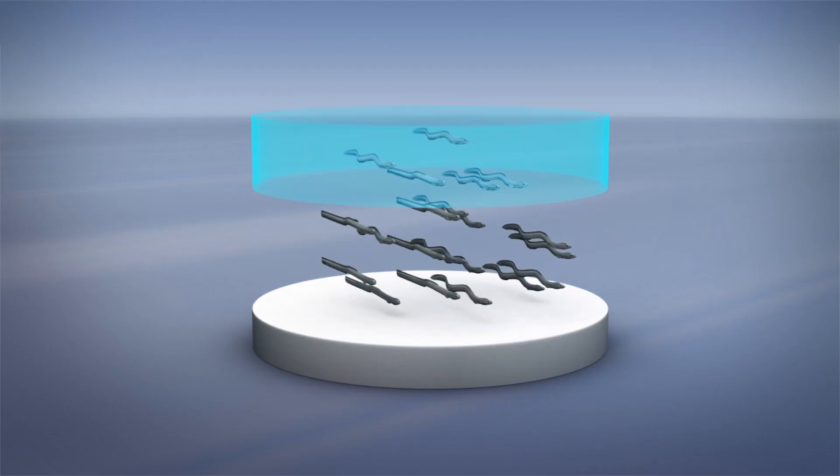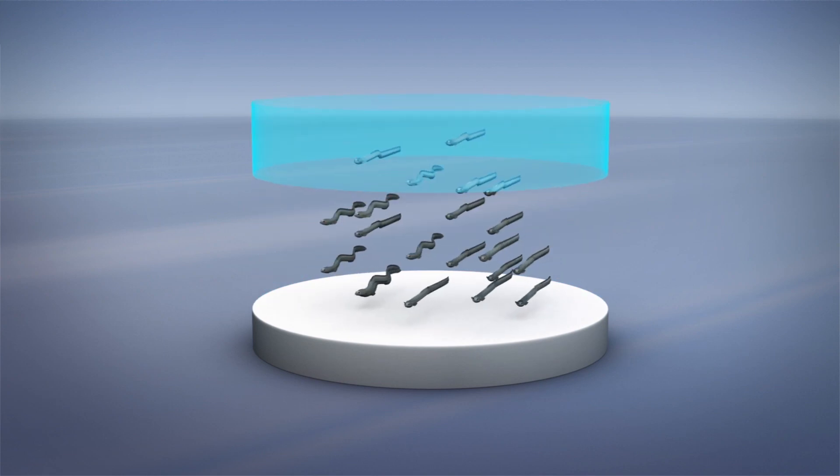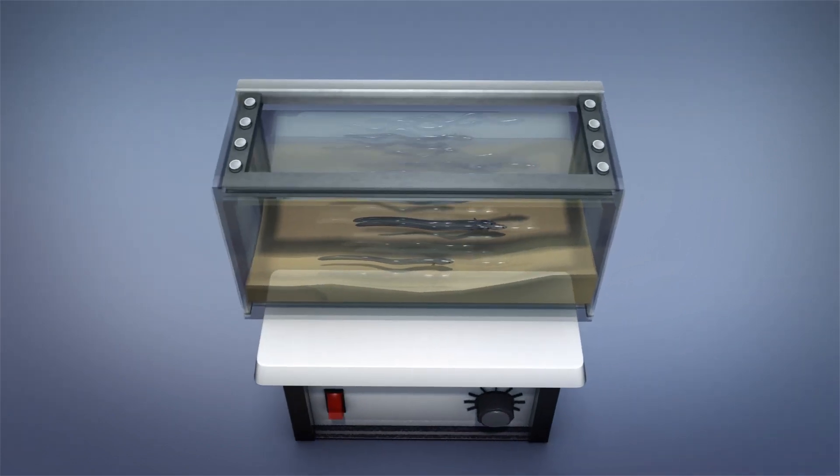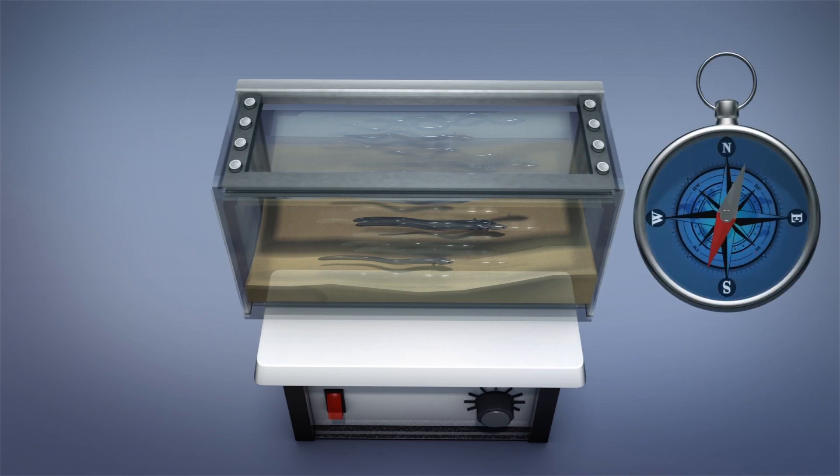According to a study published in the journal Communications Biology, scientists gathered 222 glass eels flowing in four different directions—north, southeast, south, and northwest—from separate estuaries in Osteval, Norway, and put them in a magnetic laboratory facility.